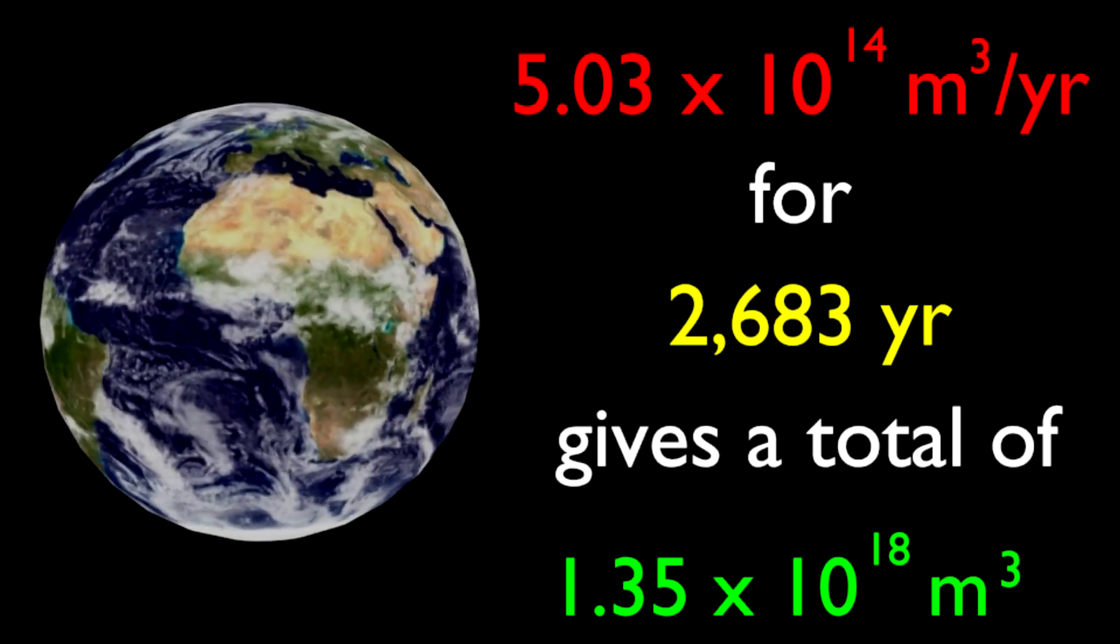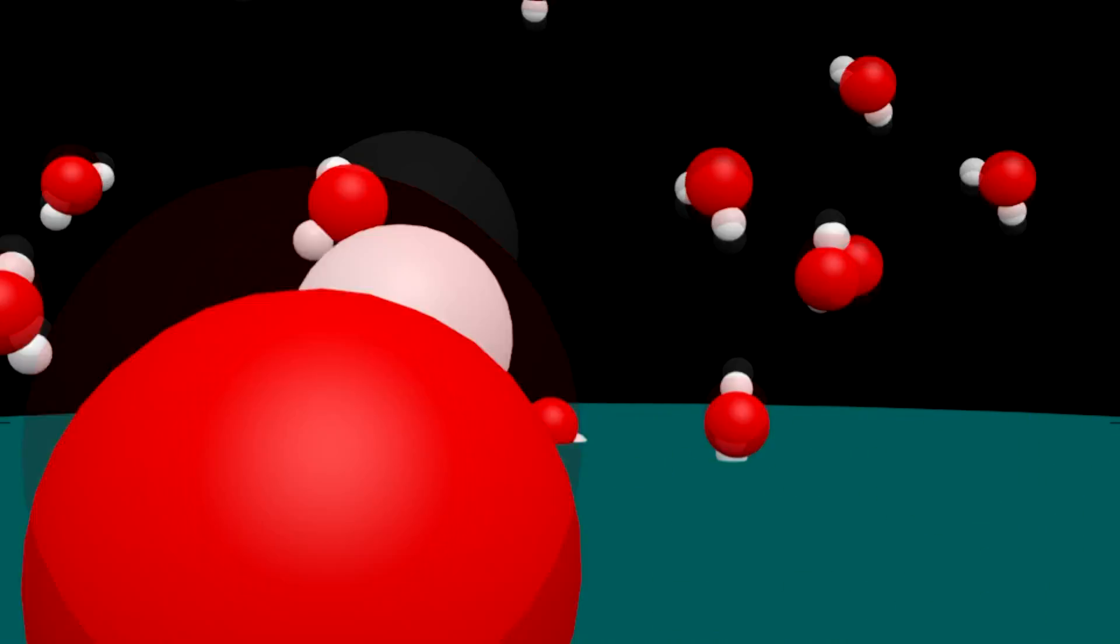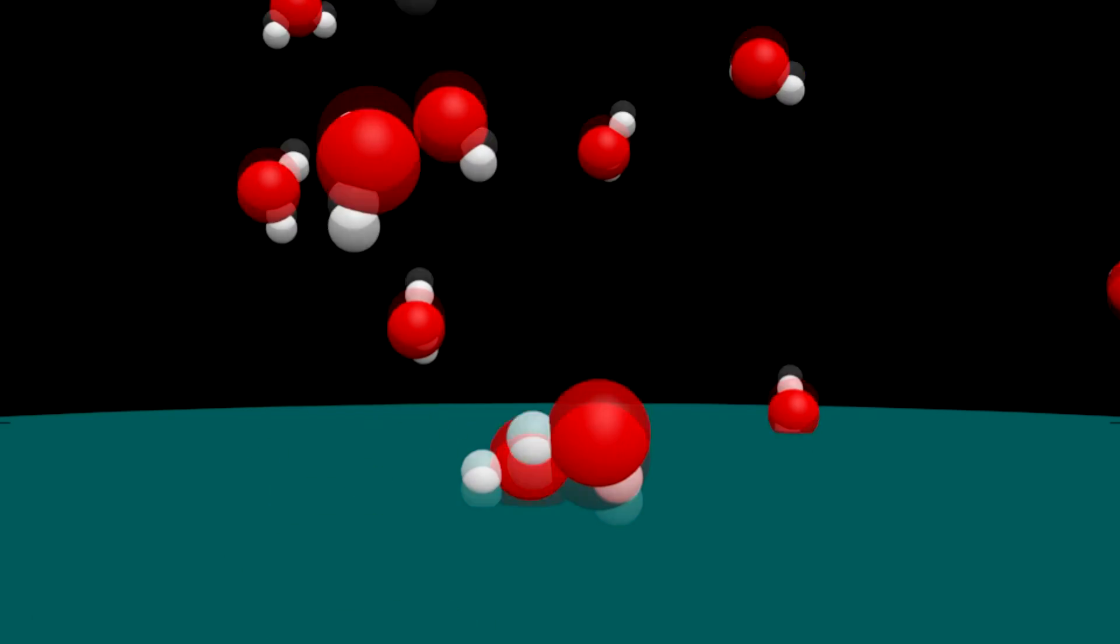It should be obvious what's wrong with this line of reasoning. The amount of water in the oceans doesn't change, because the rate at which the oceans lose water by evaporation is equal to the rate at which the oceans gain water by precipitation.